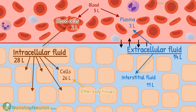Now, the capillary wall is highly permeable, so both interstitial fluid and plasma are continuously mixing with each other and have almost the same composition. The main difference is in protein concentration: the capillary wall is not very permeable to proteins, so proteins mostly stay in the plasma, giving plasma a much higher protein concentration.